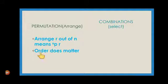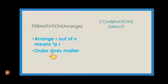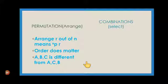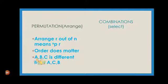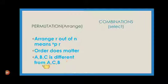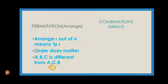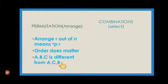In permutation, in arrangement, order does matter. Suppose there are 3 persons A, B, C. These 3 persons are different from the arrangement. So whether we arrange A, B, C or A, C, B — it is completely different.